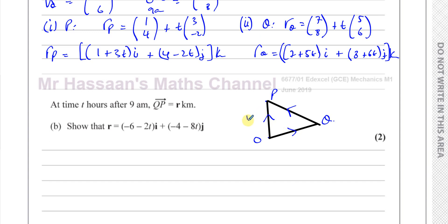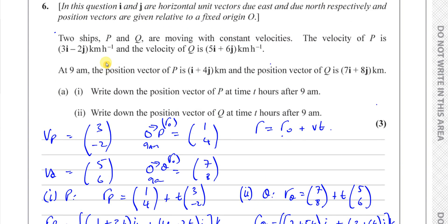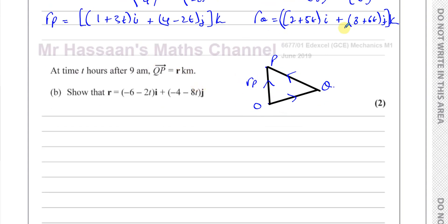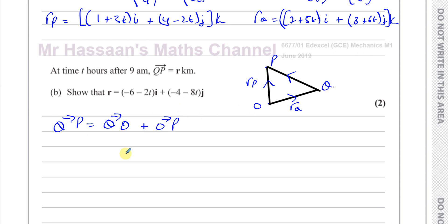We have rP, the position vector of ship P at any time T, and rQ, the position vector of Q at any time T. To find the vector from Q to P, we go from Q to O and then O to P — that's minus rQ plus rP, which is rP minus rQ. So we take these two vectors and subtract them: P minus Q.